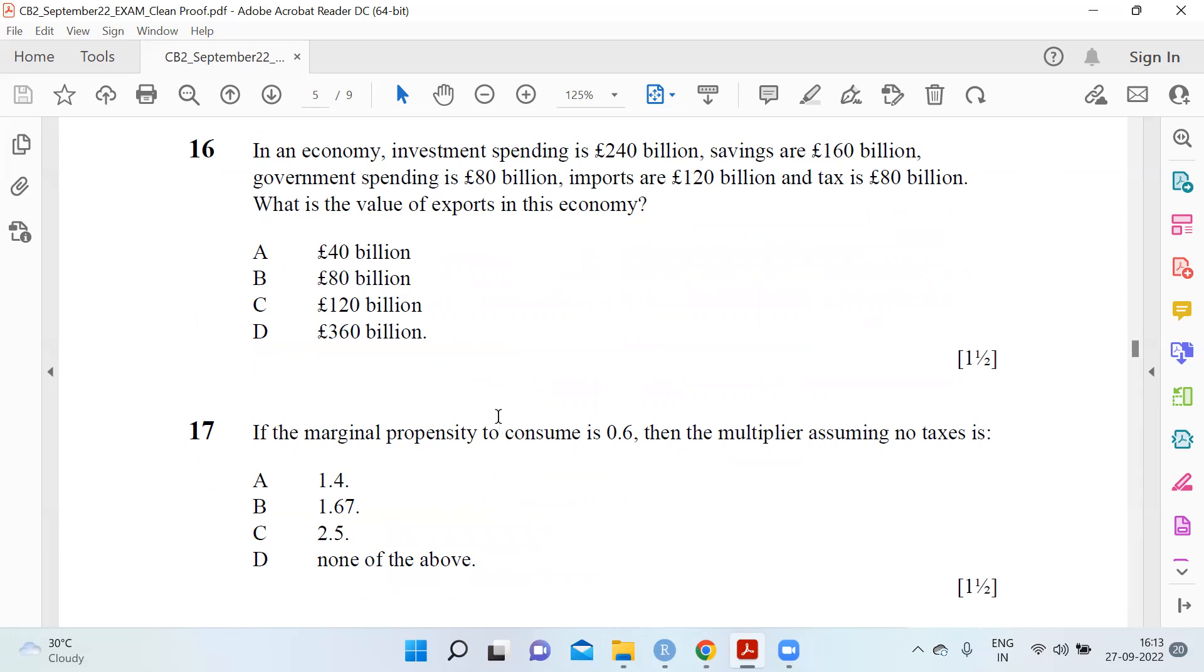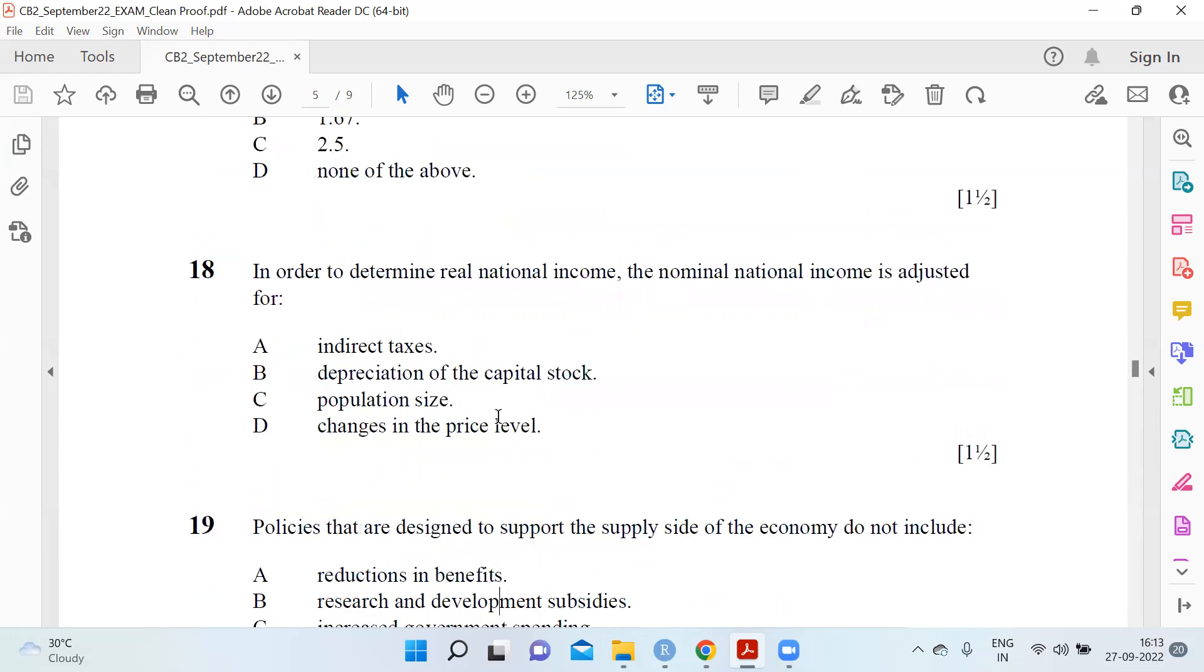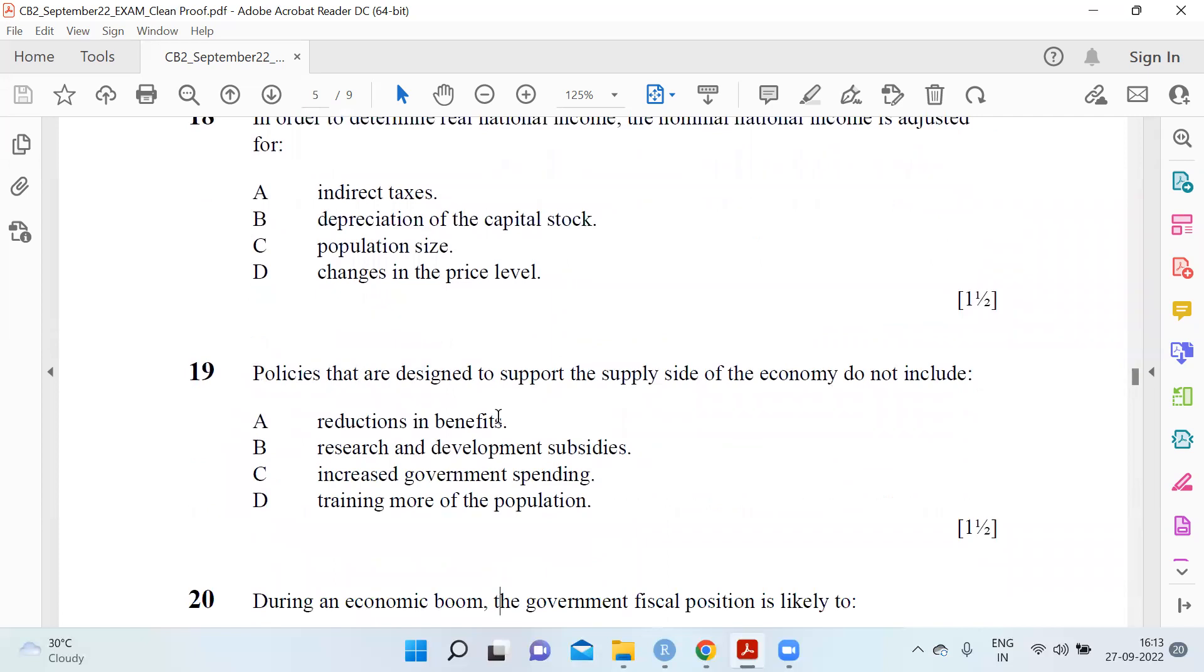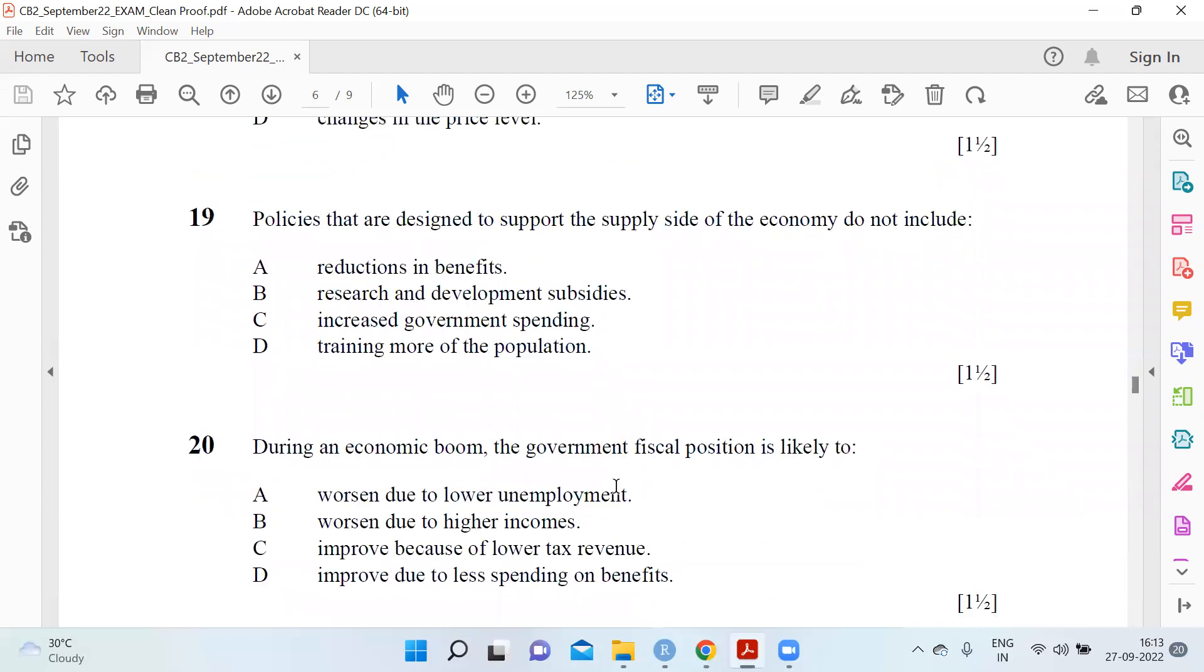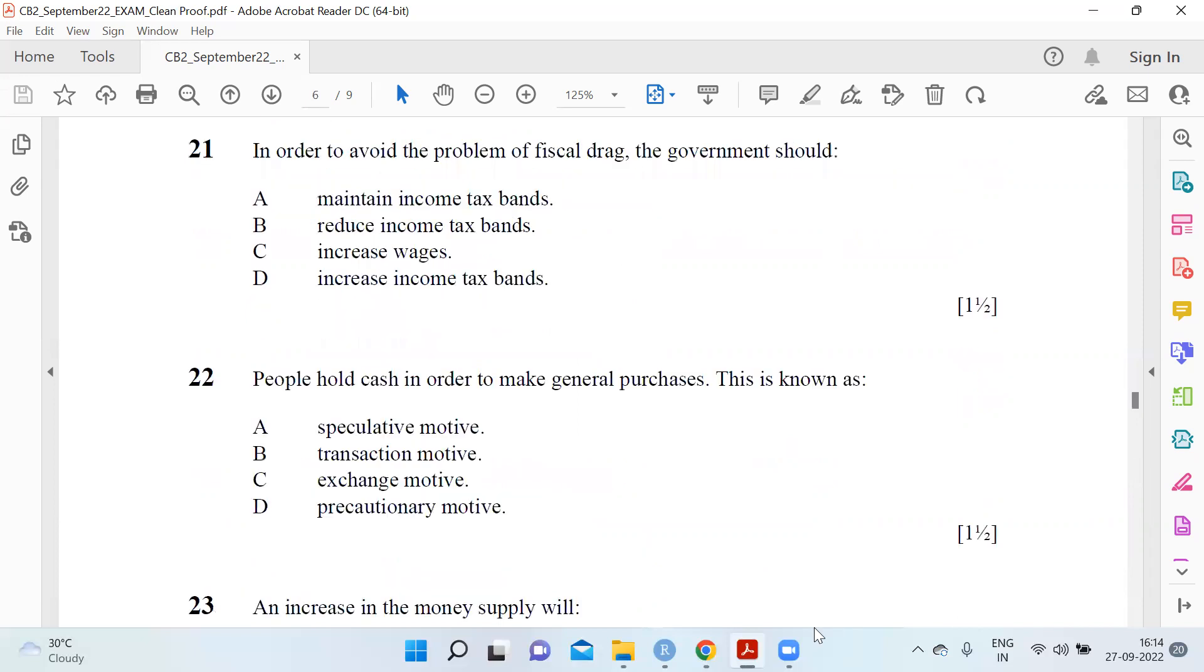In order to determine the real national income, national income is adjusted for changes in price level, which is D. Policies designed to support the supply side of the economy do not include increased government spending, that is C. During economic boom, the government fiscal position is likely to improve due to less spending on benefits, which is D. In order to avoid the problem of fiscal drag, government should reduce income tax bands, which is B.